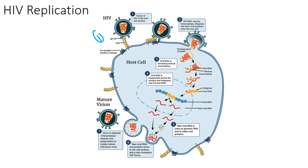The second step is fusion and penetration. Binding of both co-receptors triggers a conformational change in GP120 and GP41, which allows fusion of the viral and cellular membranes. Following fusion, the capsid is going to enter the cytoplasm, and that's when the whole process really kicks off. At this point, we move into reverse transcription.